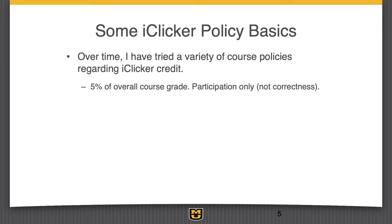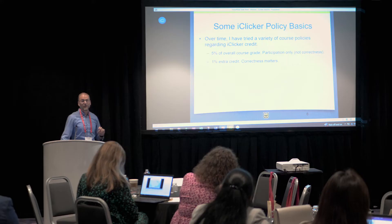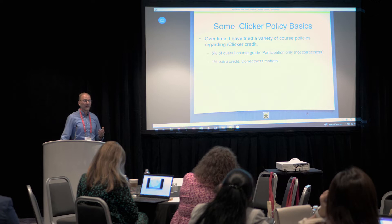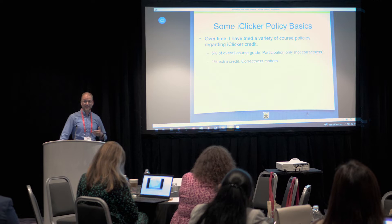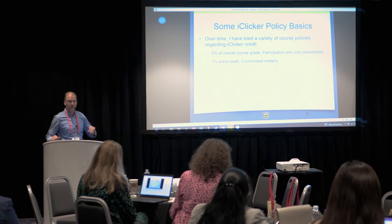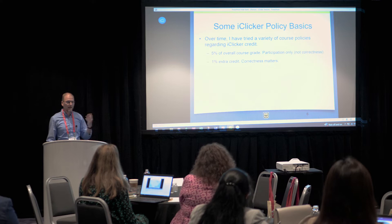We went to extra credit — we gave them one percentage point of extra credit, but we started counting whether they were right or wrong. One of my thoughts was that student elasticity to extra credit is sometimes more than to regular credit — and this is probably the only room I could ever say that and have people understand what I'm talking about. When we started counting correctness, there seemed to be a bit more effort put forth by students in answering the questions correctly.